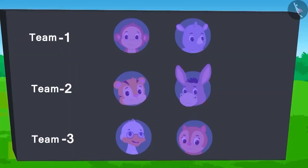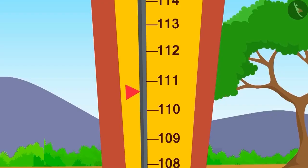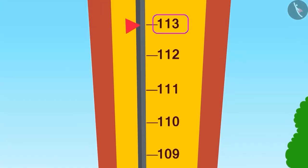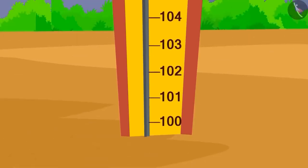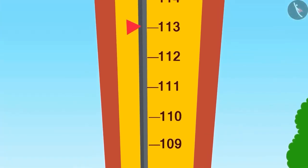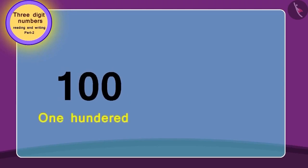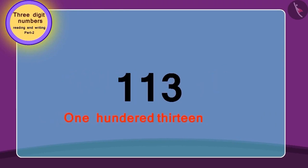First, from team 1, Gagu tried. He used his full strength and the flag reached the number 13 marks above 100. Can you read this number? This number is 13 points above 100, so to get this number we will add 13 to 100. In this way the number becomes 113. Isn't it easy?